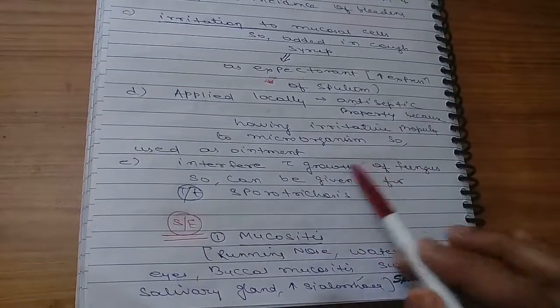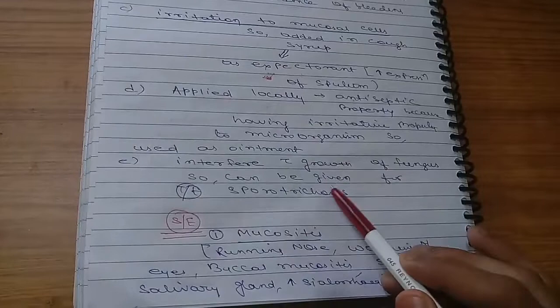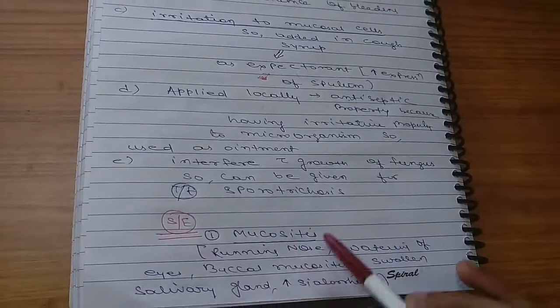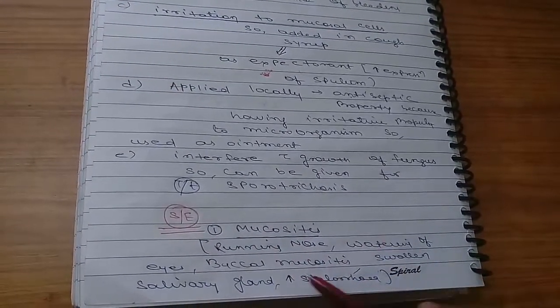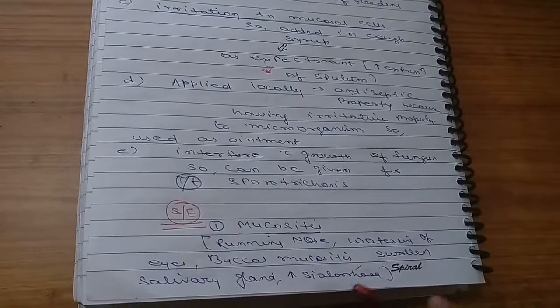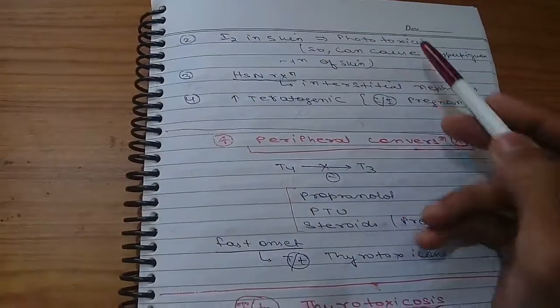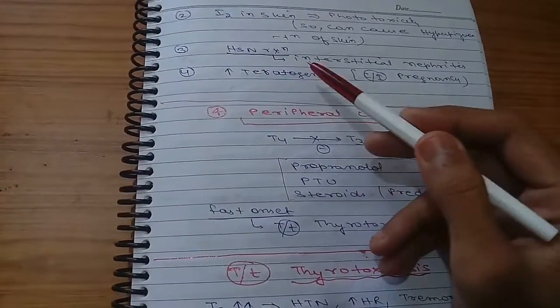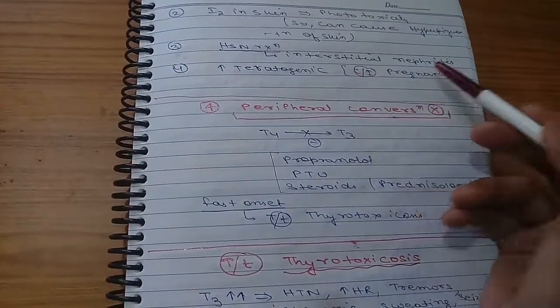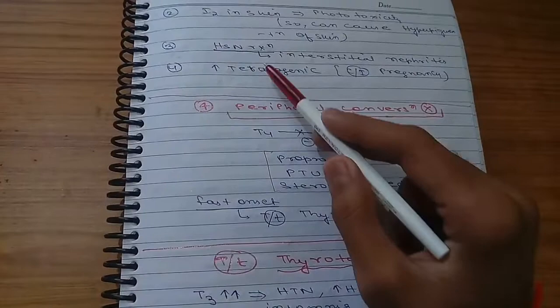Side effects: first is mucositis, running nose, watering of eyes, buccal mucositis, swelling of salivary glands, and sialadenitis. Iodine in skin can cause for toxicity. Hypersensitivity reaction may be there that will lead to interstitial nephritis. It can also increase risk of teratogenicity, so contraindicated in pregnancy.